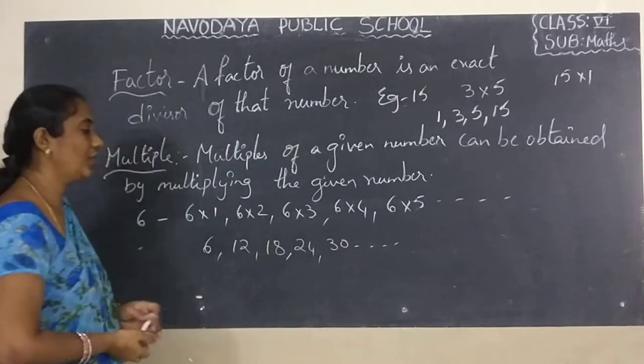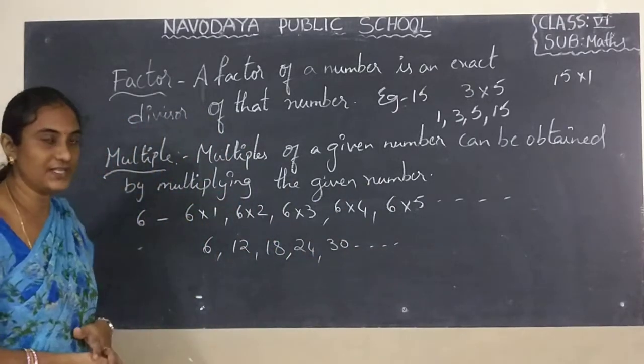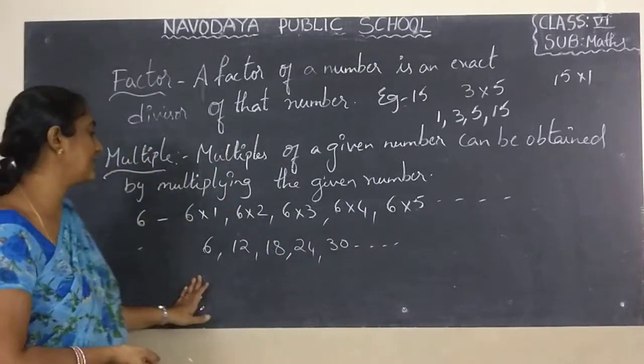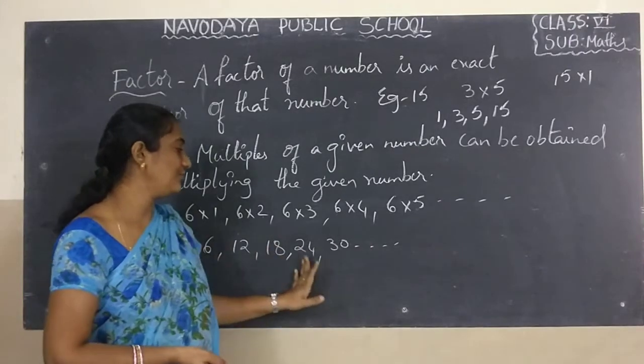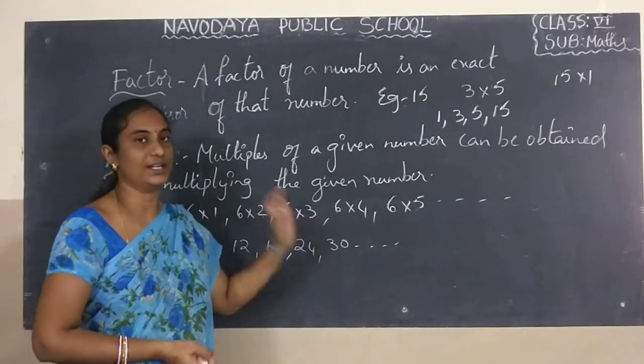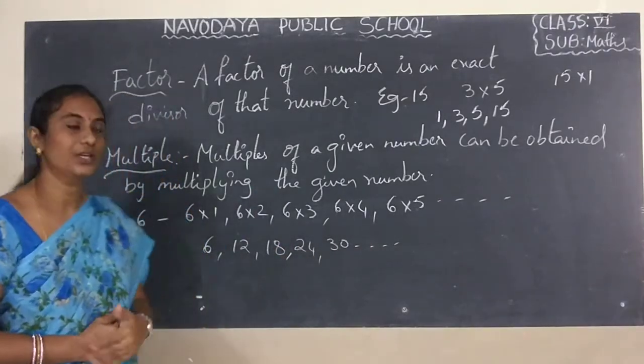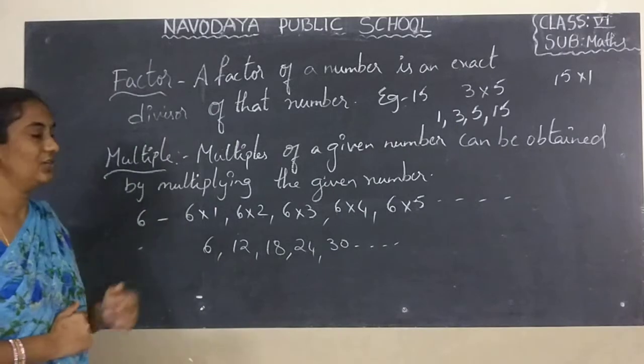So the multiples of 6 are 6, 12, 18, 24, 30, and so on. These are the multiples of 6.